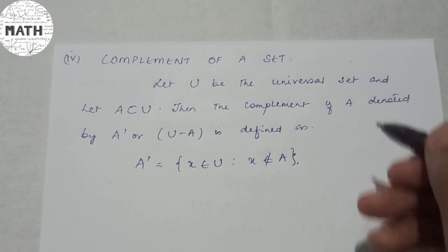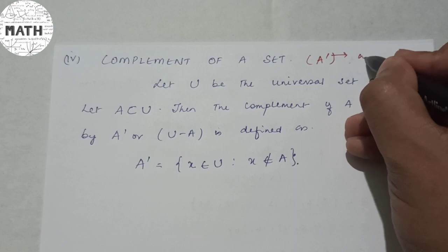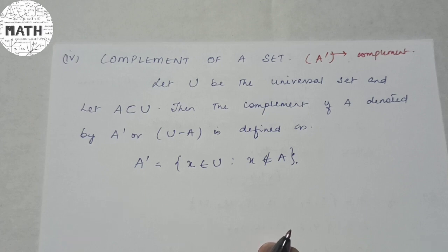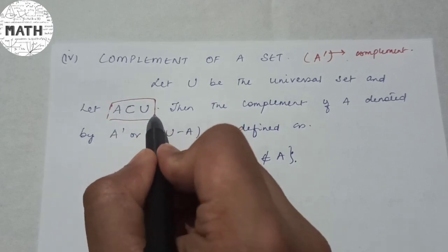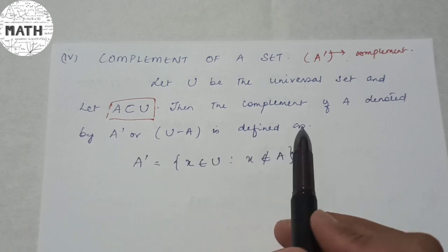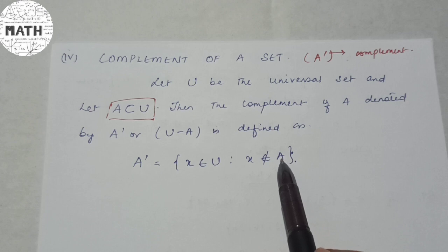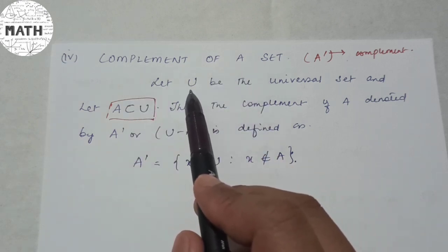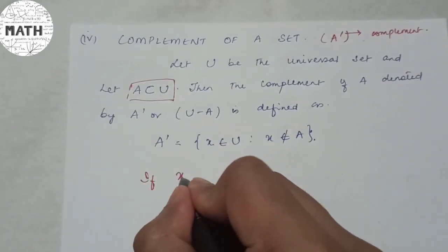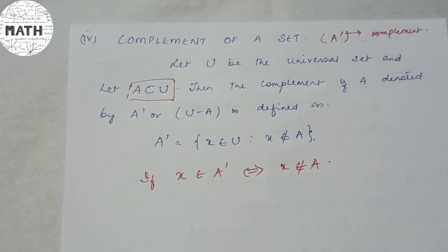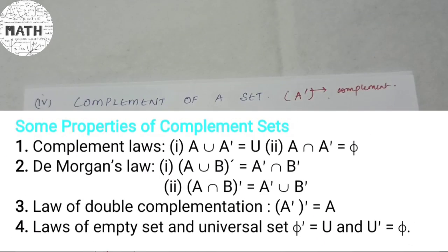Next is the complement of a set, denoted A' (A dash) or U minus A. Given U is the universal set and A is a subset of U, the complement of A is defined as the set of all x in U such that x does not belong to A. Whenever you are doing complement, there must always be a universal set. There are also some important properties of complement shown in the video — go through those as well.